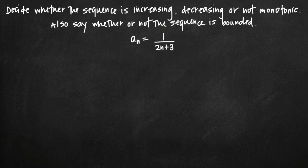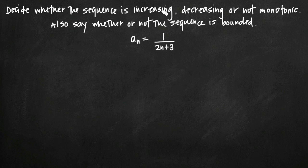The first thing we need to decide is whether or not the sequence is increasing, decreasing, or not monotonic. If a sequence is always increasing or always decreasing, then it can also be considered monotonic, because monotonic just means that it's always moving in the same direction. If it increases and then decreases and never goes in a particular direction, then the sequence is called not monotonic.